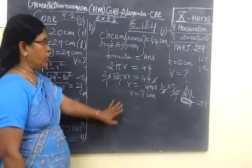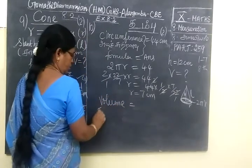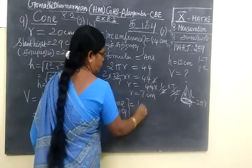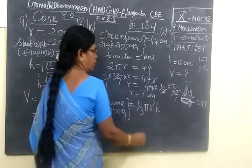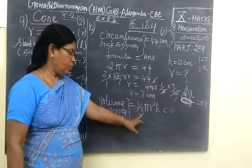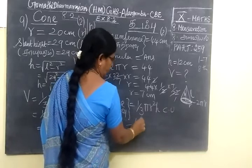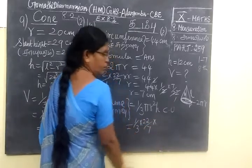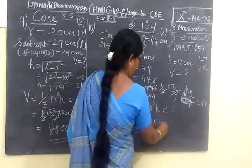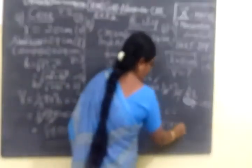They are asking what is volume. Volume means 1 by 3 πr²h cubing unit. Volume 1 by 3 πr²h cubing unit. So this is equal to 1 by 3, 22 by 7, radius we can change, 7 into 7 into h equal to 12. So in the 7 you can apply now, 3, 1 times, 4 times.